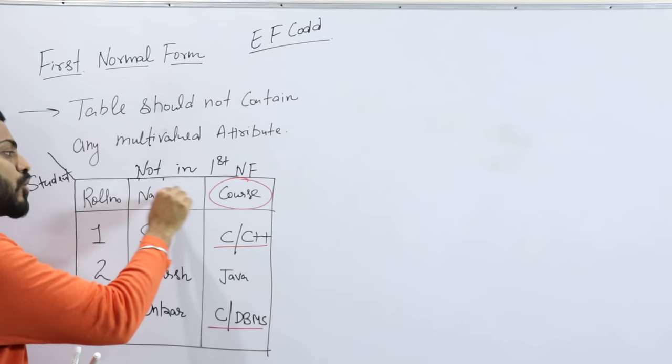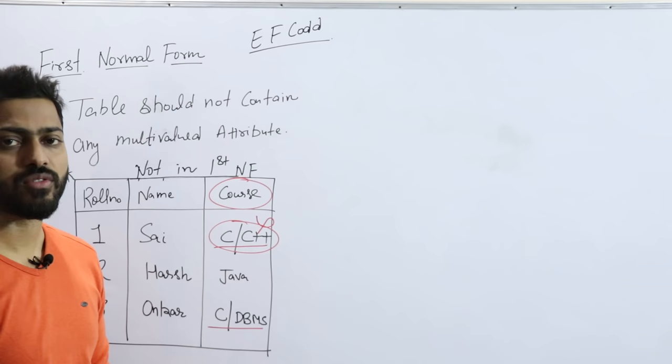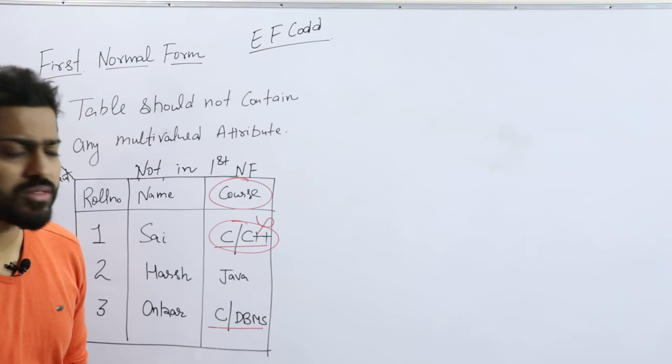In GATE, if they represent a table like this, you can clearly write that no, this table is not in first normal form. The next question is how to convert this table into first normal form.